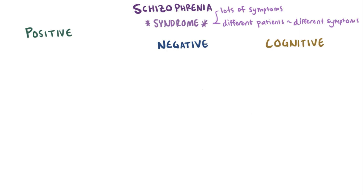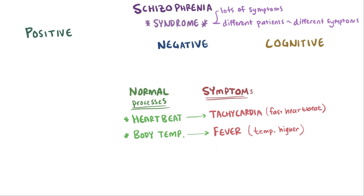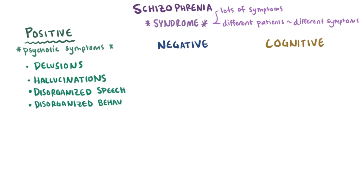Taking a step back, most human symptoms from any illness are extreme versions of a normal physiologic process. For example, everyone has a heartbeat, and tachycardia is a fast heartbeat. In the same way, everyone has a normal body temperature, but during a fever that temperature is higher. In schizophrenia, patients have positive symptoms — not positive in the sense that they're helpful, but positive in the sense that there's some new feature that doesn't have any normal or physiologic counterpart. These are the psychotic symptoms: delusions, hallucinations, disorganized speech, and disorganized or catatonic behavior, none of which occur physiologically.